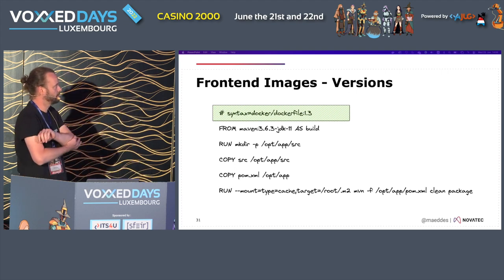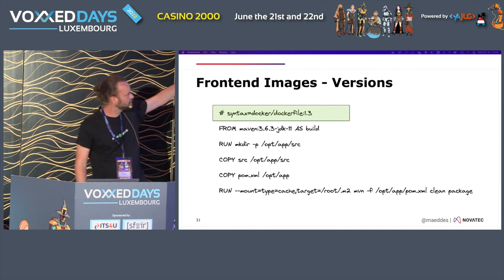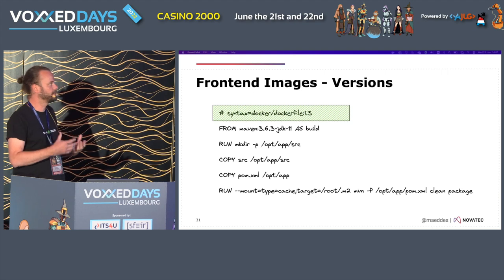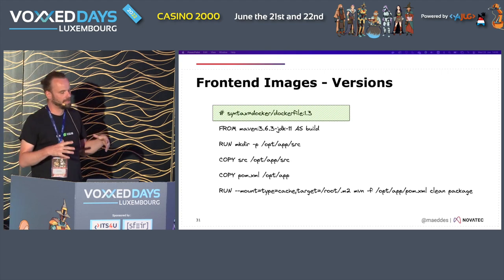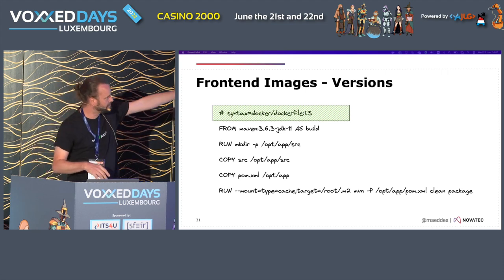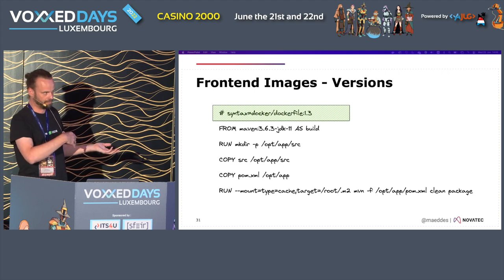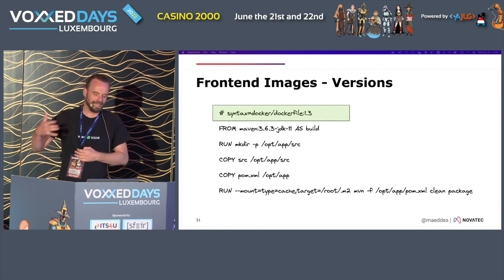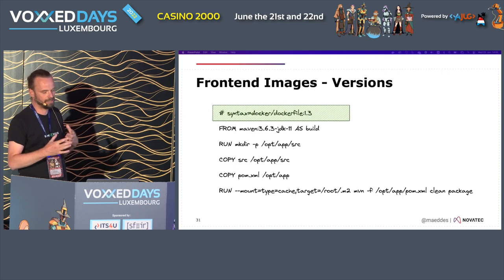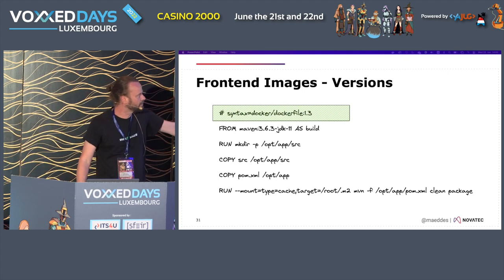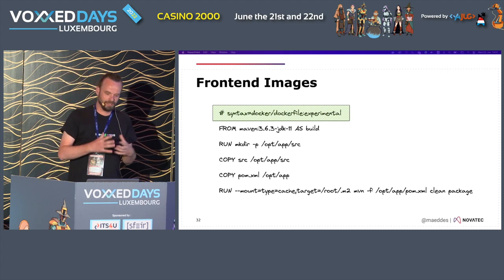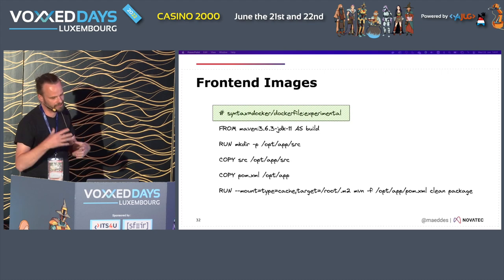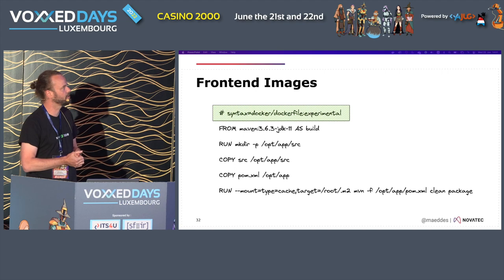Another thing BuildKit introduced is front-end images. You can define which Dockerfile version you're going to use, ensuring multiple team members use the same version. I specified version 1.3 here. If you omit that, Docker uses a default - but that's the same as using 'latest' images, which will update whenever Docker thinks it's right and you never know which version you're currently using. The features in the Dockerfile basically result from the front-end image you initially tag, and this gives you the possibility to use functionality not included in the standard settings of your Docker environment.